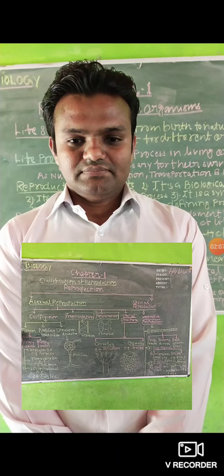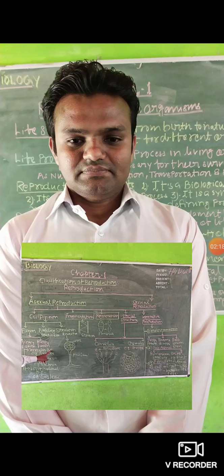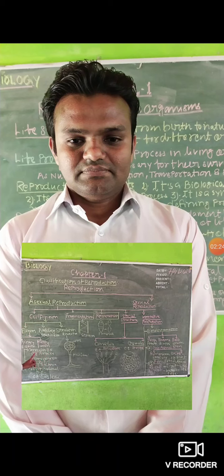Let us discuss about fission again. Fission is of two types: binary fission and multiple fission. Binary fission is possible by three ways. The first is irregular binary fission, which is very common in amoeba.